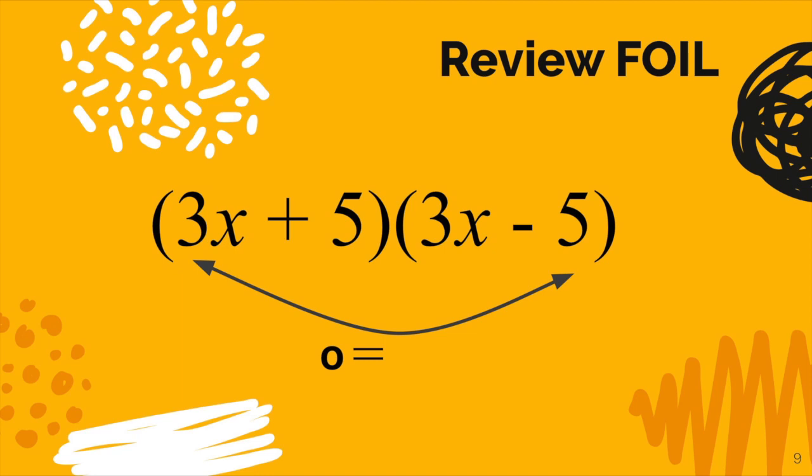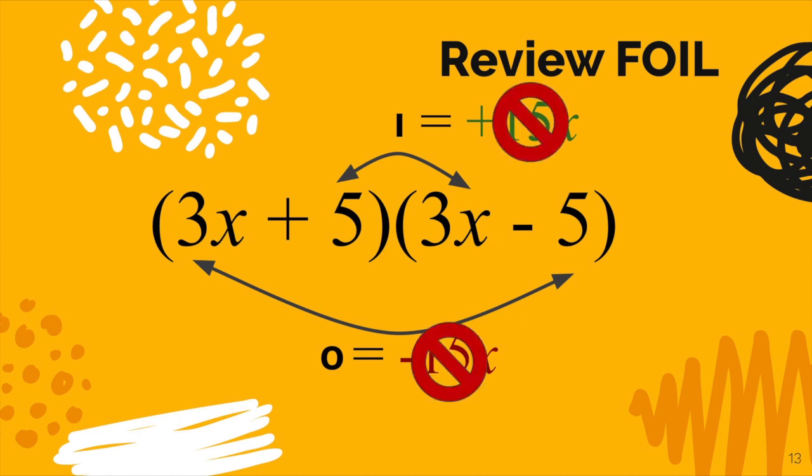So let's start with the O. The O here would be 3x times negative 5, which is negative 15x, and then the I would be positive 15x. Now what do you notice about those when you combine them? They're going to cancel each other.